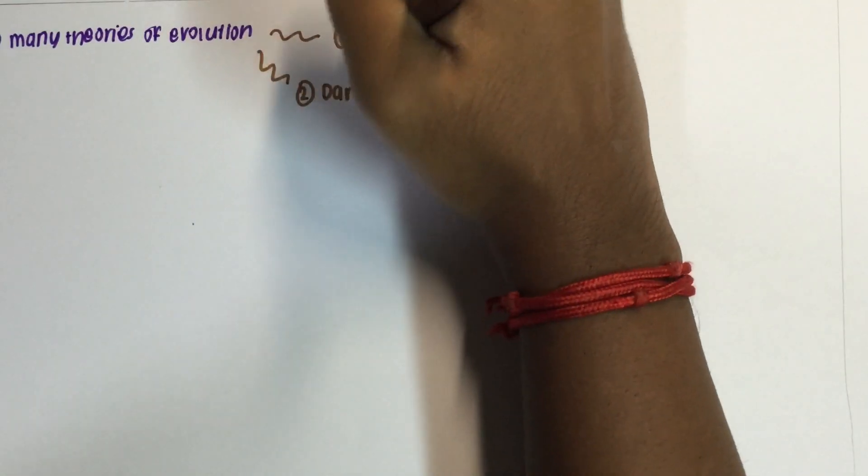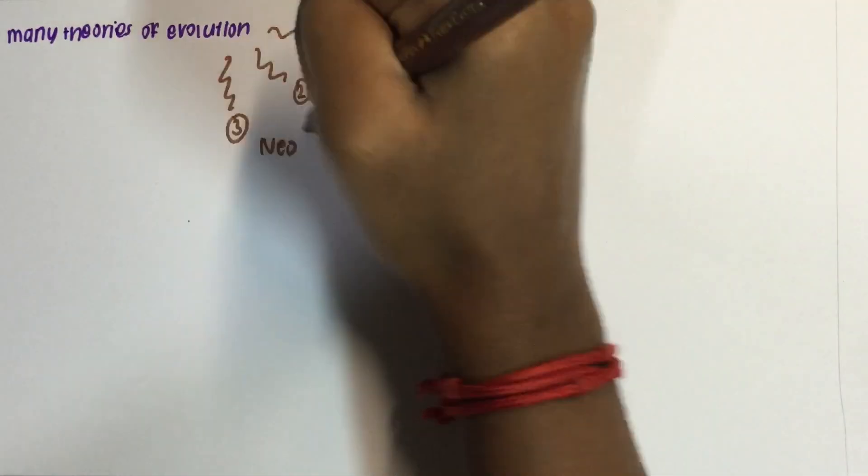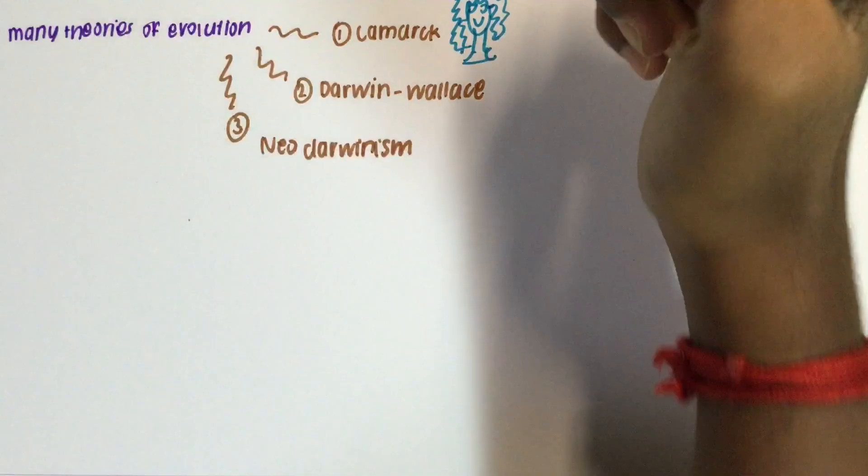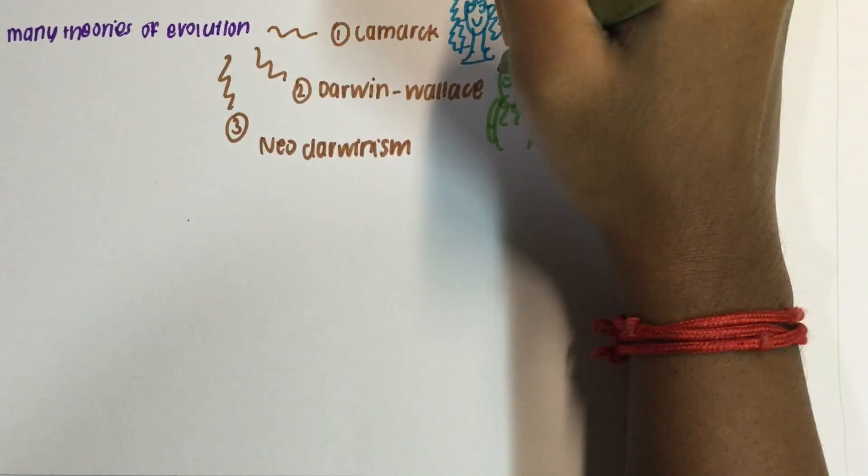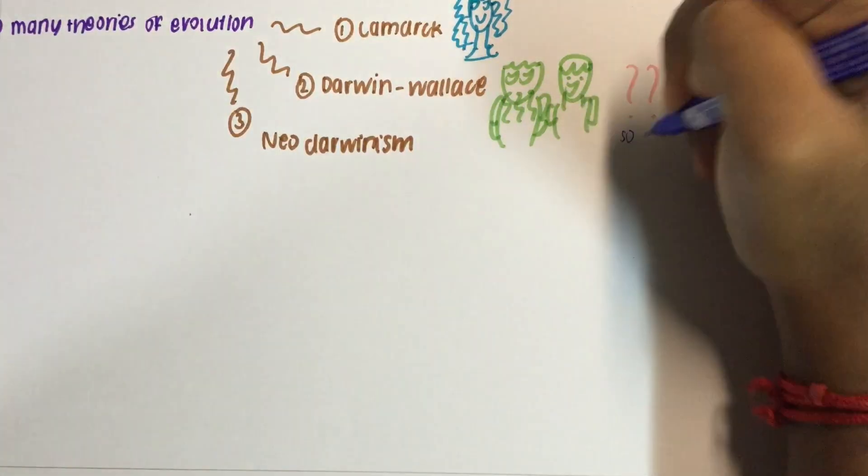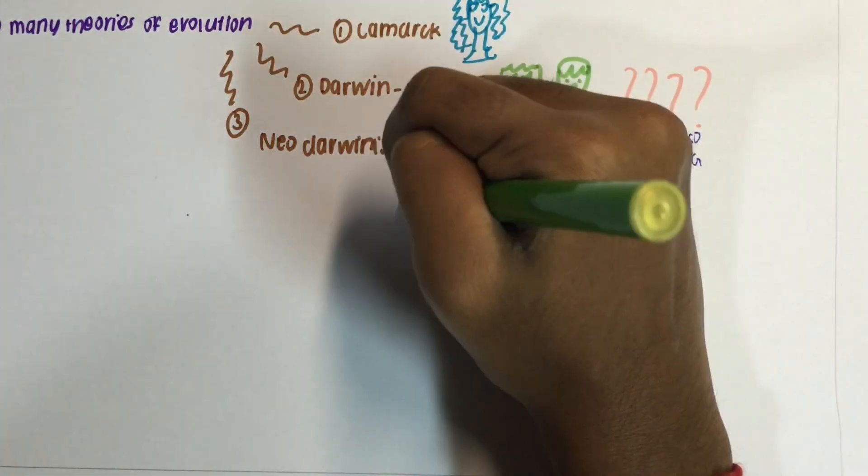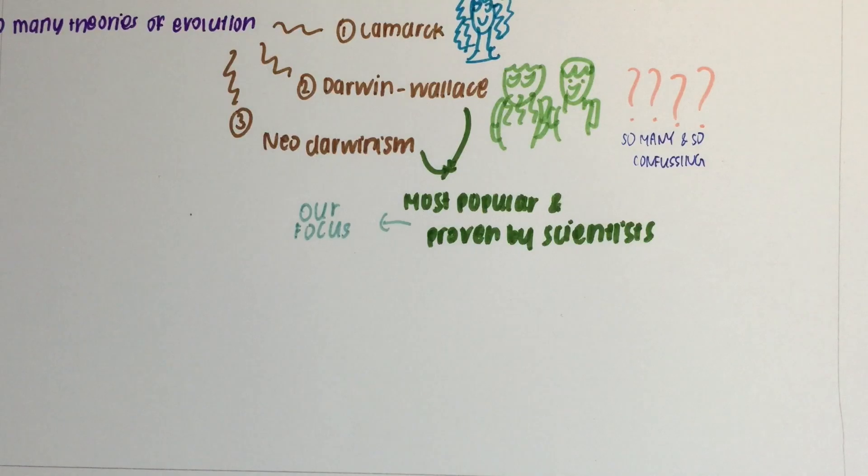There are multiple theories of evolution, but the most popular are the Lamarck, Wallace-Darwin, and Neo-Darwinism theories. Of these three, the Darwin-Wallace theories are by far the most tried and tested and popular theories, which will be our main focus for today.